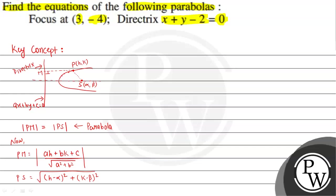The locus of P is such that PM equals PS always. Now applying this concept to the given question: the focus is at (3, -4) and the directrix is x plus y minus 2 equal to 0. Consider a general point P on the parabola.